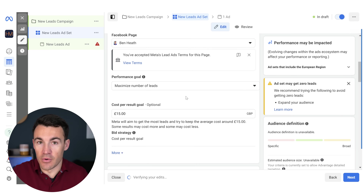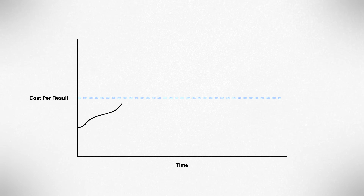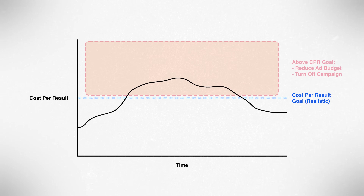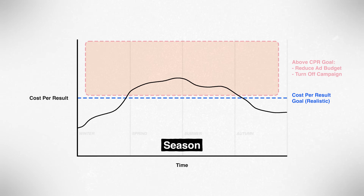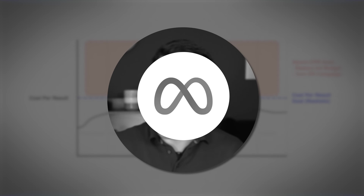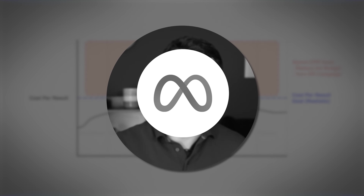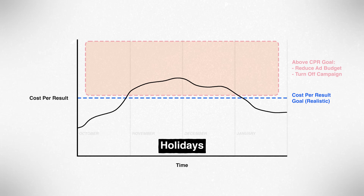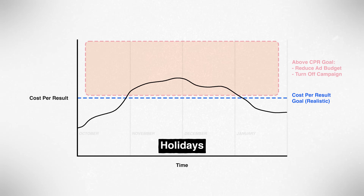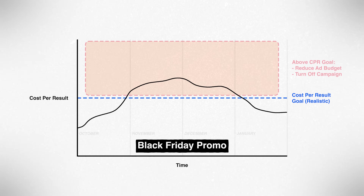The upside of adding in a realistic cost per result goal — let's say 15 pounds and we know that's realistic — is that your budget will be reduced when your ads are not profitable. That could be seasonal: certain times of the year where your ads aren't as profitable, and you're quite happy for Meta to reduce your budget then. It could be certain days of the week that don't perform as well — Meta will reduce the budget back down on those days. And it could be around holiday spikes like Black Friday, where costs spike due to more advertising activity. If that's not a good time for your business, Meta's going to see that and reduce your budget or not run your ads at all during those periods.